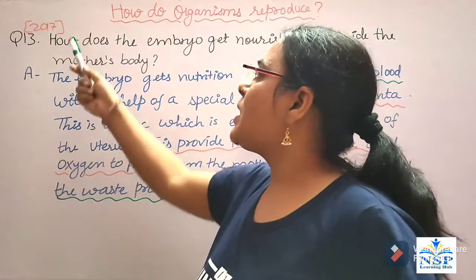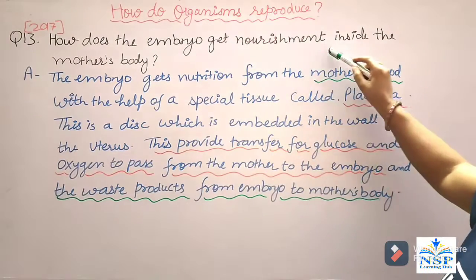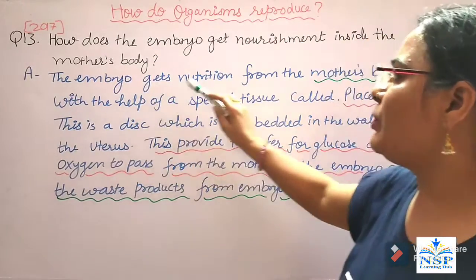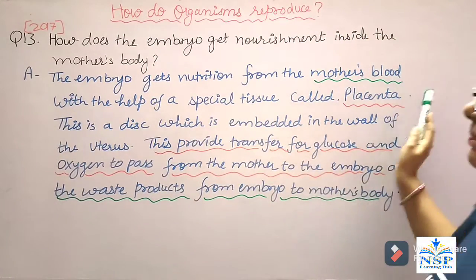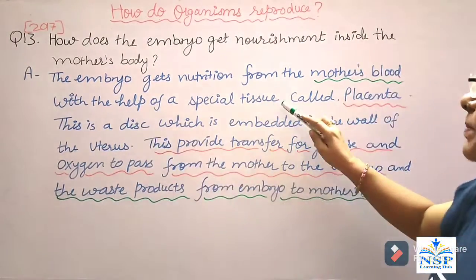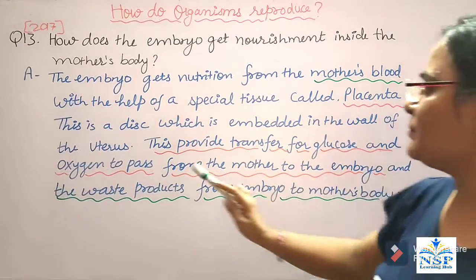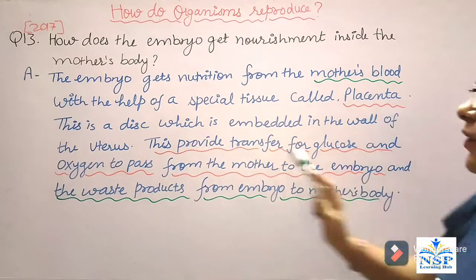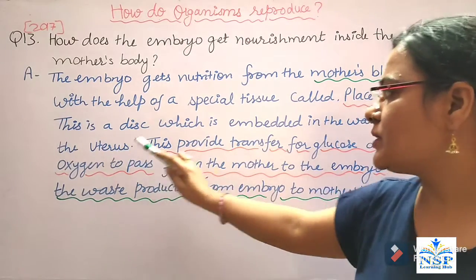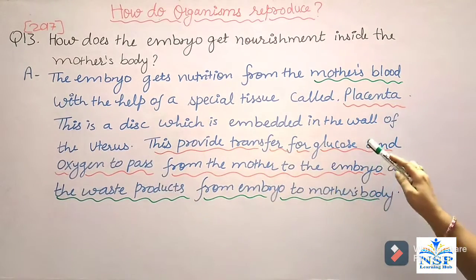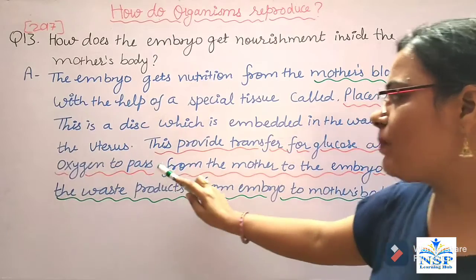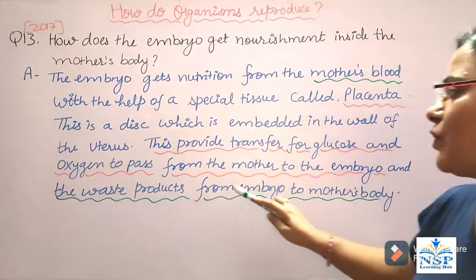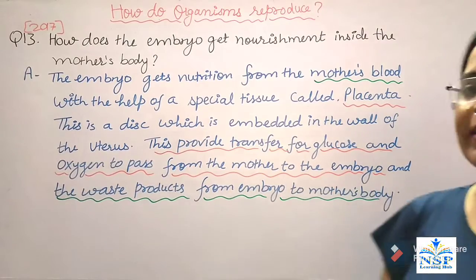Our next important question is: how does the embryo get nourishment inside the mother's body? The embryo gets nutrition from the mother's blood with the help of a special tissue called the placenta. This is a disc embedded in the wall of the uterus. It facilitates the transfer of glucose and oxygen from the mother to the embryo, and waste products from the embryo to the mother's body.